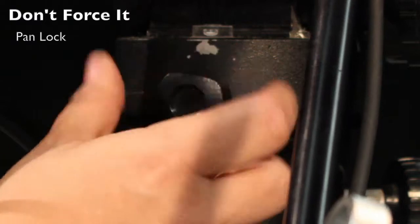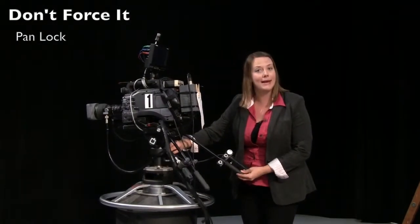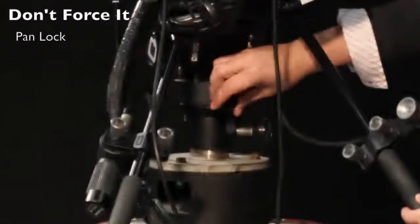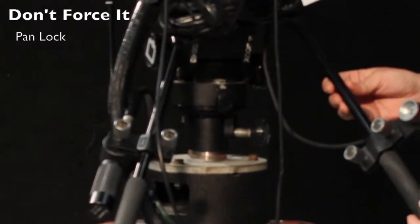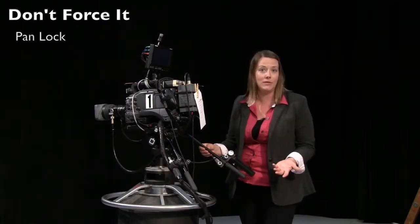Now you see back here on the back side of the camera, I'm going to loosen the pan lock before I pan left or right. If this lock is all the way turned to the right, you're going to find resistance. Don't force it, or else you'll end up stripping the pan lock.